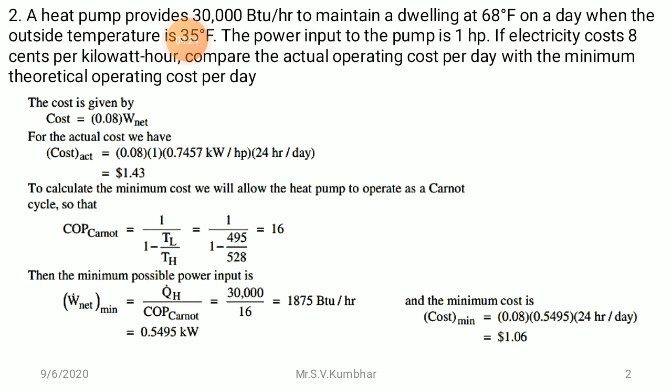The heat pump provides 30,000 BTU per hour, so dividing by 60 gives 1,875 BTU per minute, which equals 0.5495 kW. The minimum cost = 0.08 × W_net = 0.08 × 0.5495 × 24 hours per day, which comes to be 1.06 dollars.